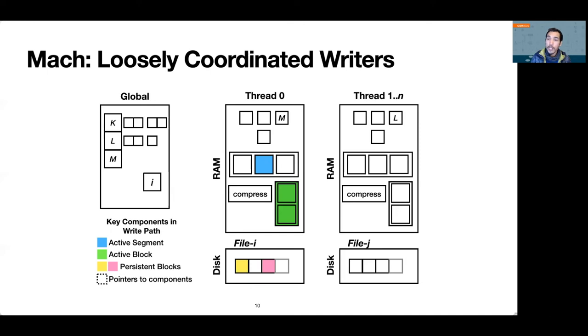Metrics engines like Prometheus are monolithic applications where multiple writers contend in the write path. Instead, Mach's key idea is to behave as a set of loosely coordinated writers that have almost no contention in the write path. Though each writer can write data for multiple sources, each source is assigned only one writer. The write path is also optimized to amortize costs over many small writes while making every write queryable.